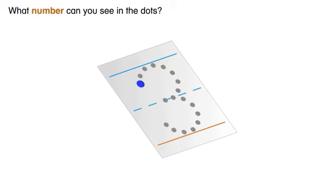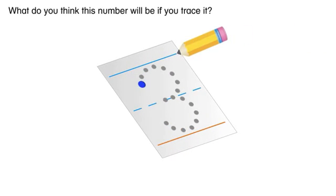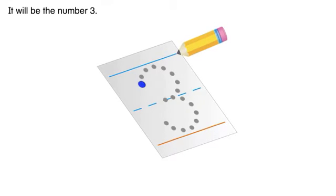What number can you see in the dots? It is the number three. What do you think this number will be if you trace it? It will be the number three.